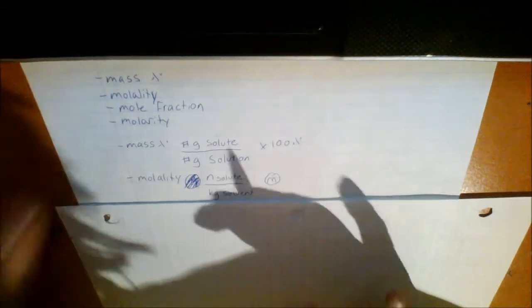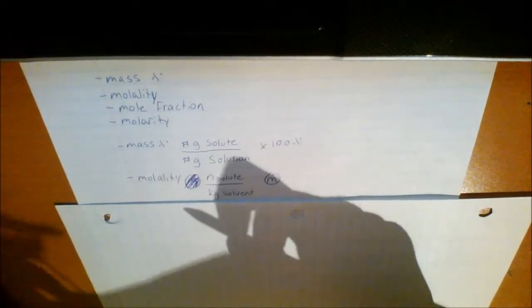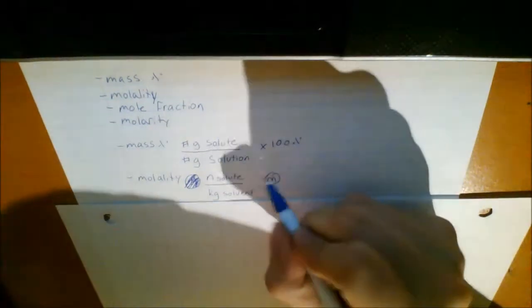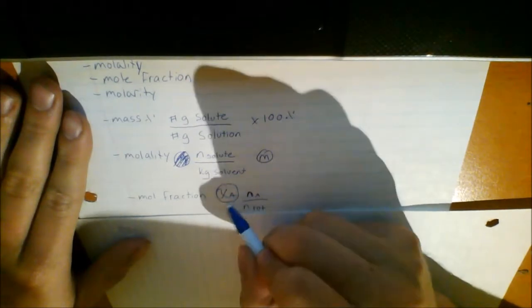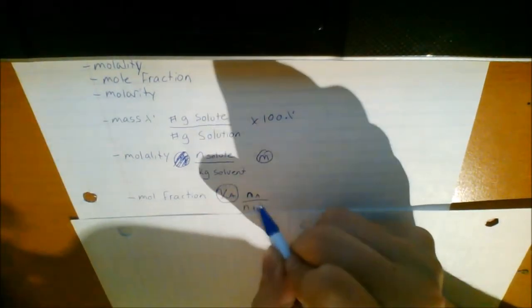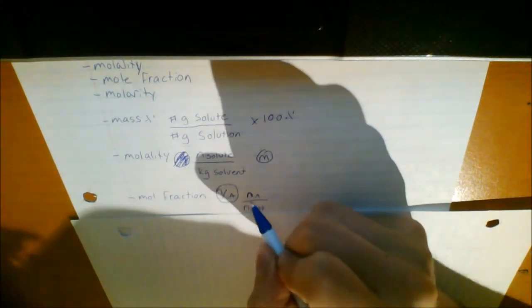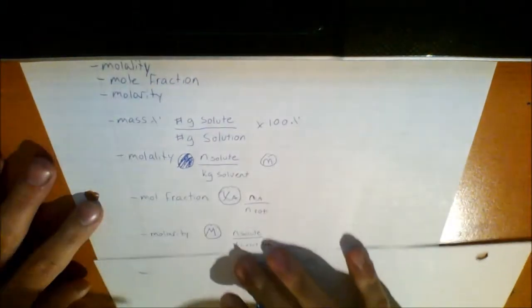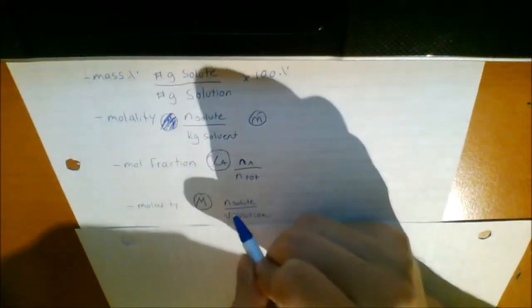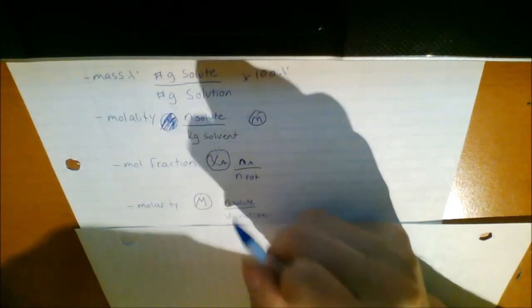Mass percent is multiplied by 100%. Molality is the moles of the solute divided by the kilograms of the solvent, symbolized by lowercase m. Mole fraction is symbolized with X and is calculated by the moles of either solute or solvent divided by the total moles. Molarity is symbolized by uppercase M and is the moles of the solute over the volume of the solution, usually in liters.